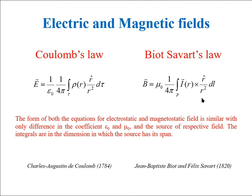The form of both the equations for electrostatic and magnetostatic field is similar with only difference in the coefficient epsilon naught and mu naught and source of respective field. The integrals are in the dimensions in which the source has its span.